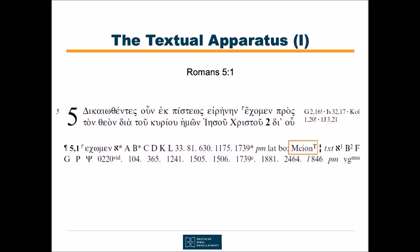The T in superscript means this is Marcion's reading according to Tertullian. I also want to point you to the little signs or characters in superscript which stand next to some Greek witnesses. For example, you find the Hebrew letter Aleph, which represents the Codex Sinaiticus, as both the variant reading and the reading of the text, but with different superscript characters. The star identifies the original reading of the manuscript. The numeral 1 stands for the first corrector of the manuscript, because this Codex has been corrected several times. If it was only one layer of corrections, you would just find the letter C in superscript, standing for correction.